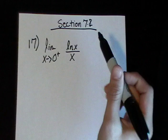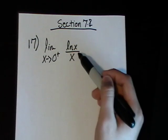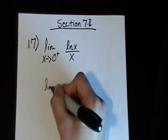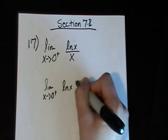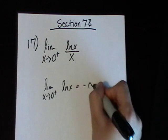First, we want to find the limit of ln of x as x approaches 0 from the right. That equals negative infinity.